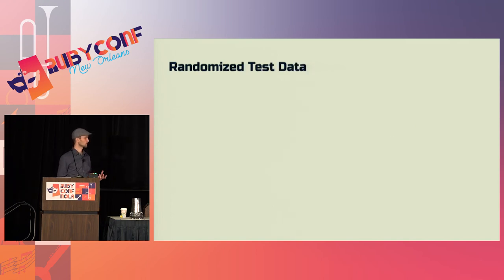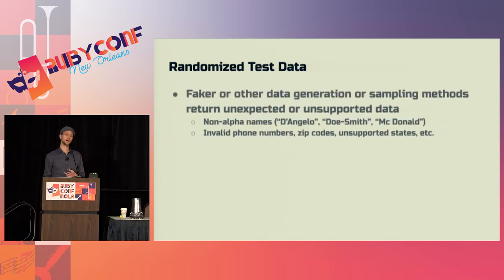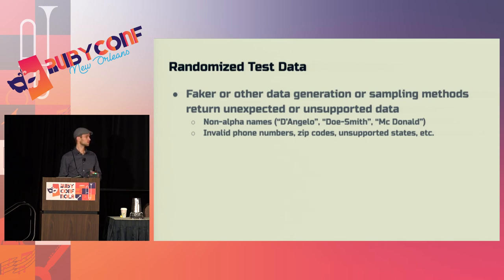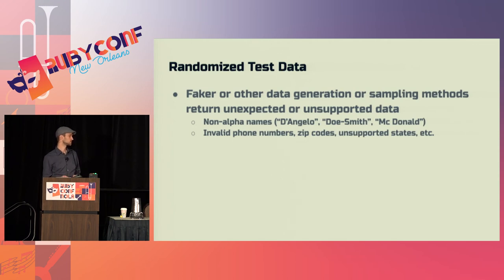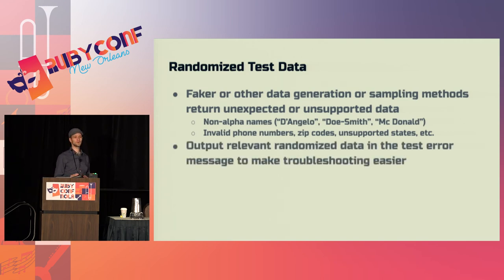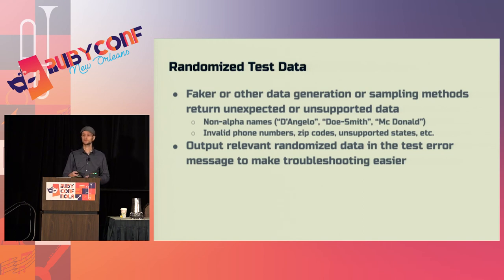Another common case is randomized test data. If you're using the Faker gem or sampling from a set of test data to randomize, you can end up with unexpected failures — names in a format your code doesn't handle properly, phone numbers that don't match validations, zip codes you don't support, or querying from all of the United States when you only support the continental US. One thing you can do to help with this is output that faked data with your test errors so when the test fails you have more context to figure out what's going wrong.